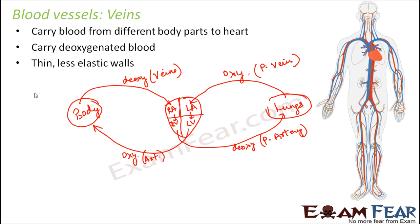Veins have thin elastic walls. Why? Because in the case of veins, since blood is flowing from different parts of the body back to the heart, the blood does not flow under very high pressure. In the case of arteries, the heart pumps blood out at very high pressure, so arteries need thick walls. But in the case of veins this is not the case, therefore they have thin elastic walls.